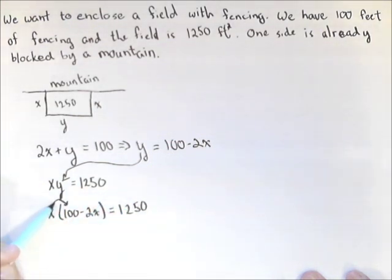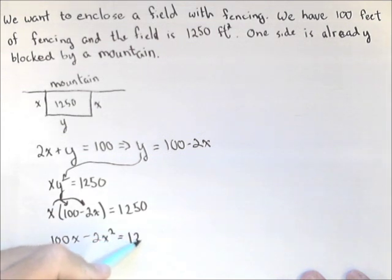So, we have x times 100 minus 2x equals 1,250. And we're going to go ahead and distribute this x as part of our solving. So, 100x minus 2x squared equals 1,250. And right now, we can put each of these sides into our graphing calculator and see where they intersect. But let's see if we can solve this by hand by making it a quadratic equal to zero. I'm going to bring everything over to the right-hand side.